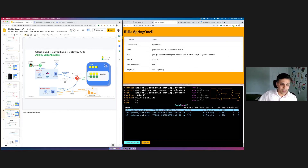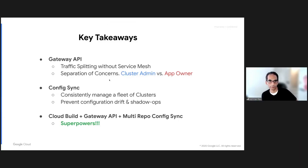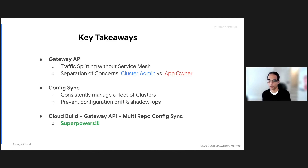Gateway API allows you to do traffic splitting without a service mesh. Separation of concerns between cluster admin and app owner. Config sync gives you consistency to manage a fleet of clusters and prevents shadow ops — like I tried to do, so don't do that. Combine it all with Gateway API plus multi-repo config sync plus Cloud Build, and you have superpowers. So thank you, that's our talk. We'll be available in the Q&A to answer any questions — just go to the Slack channel for this talk.